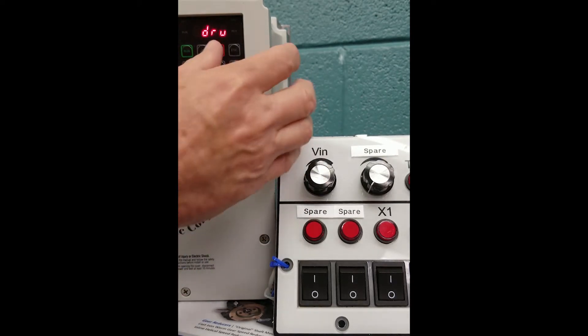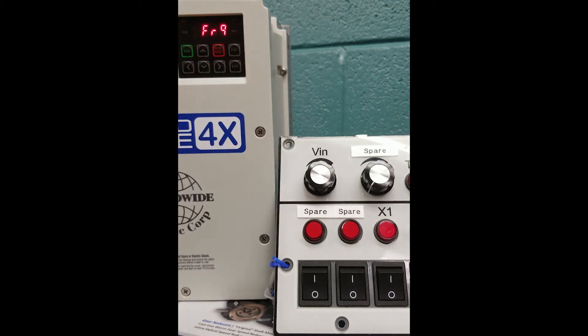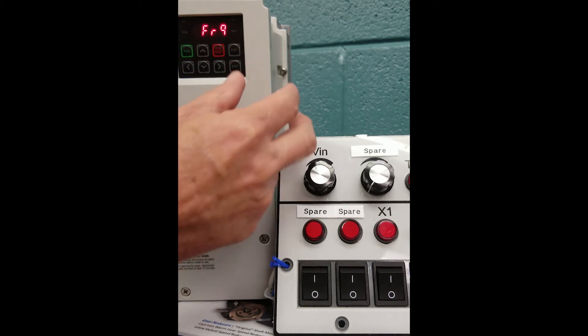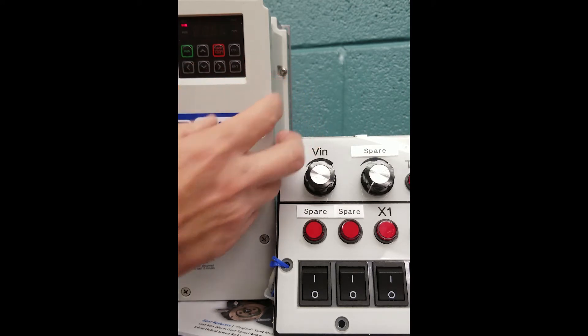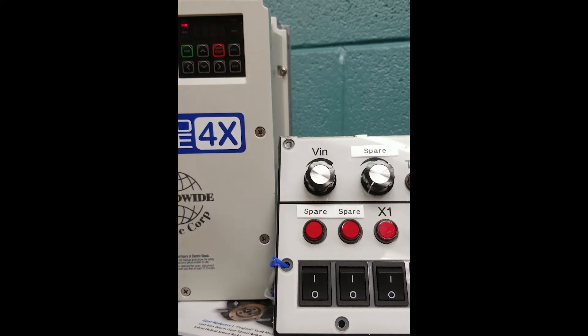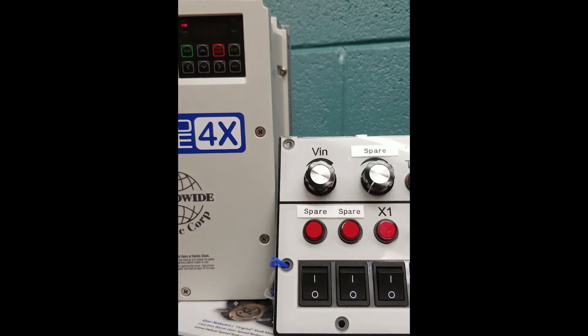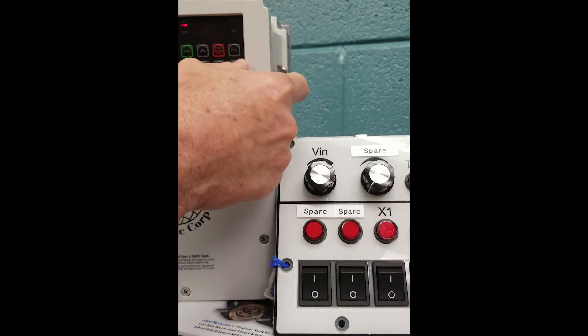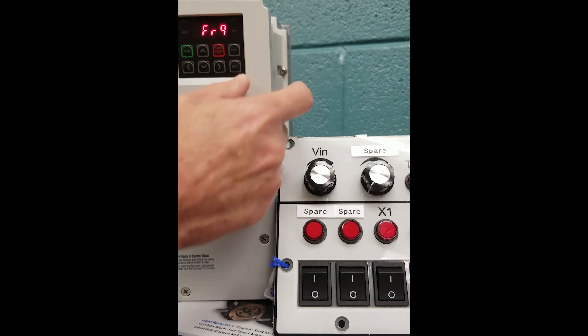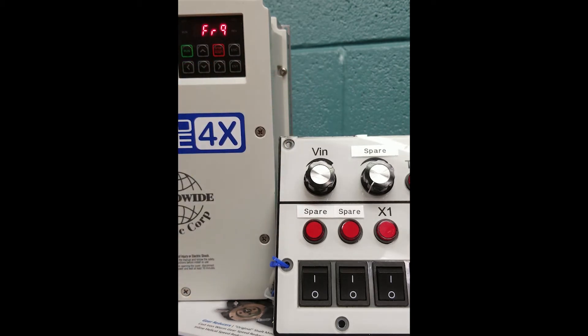Scroll up again, and we're going to see FRQ. In FRQ we're going to hit enter there, and we're looking for our frequency setting. Factory default is 0 for keypad. We need to change that to a 2 to be looking from the terminal strip. Hitting enter twice to store those parameters.